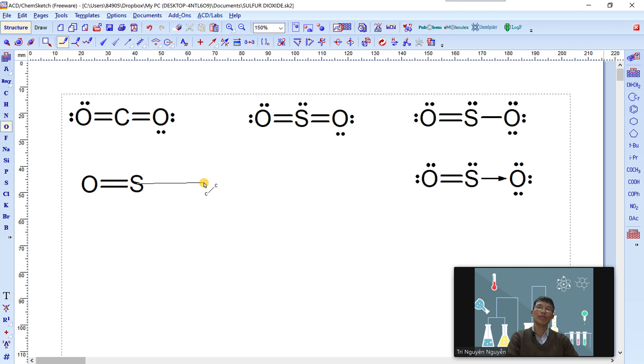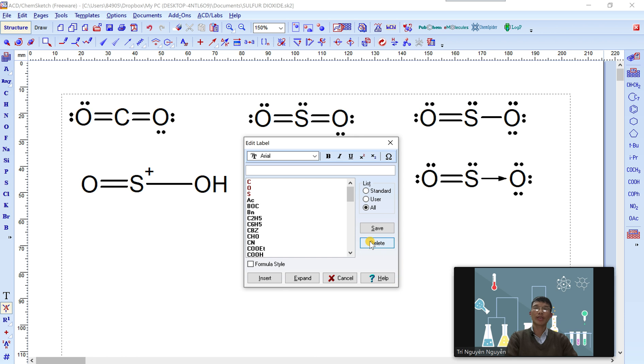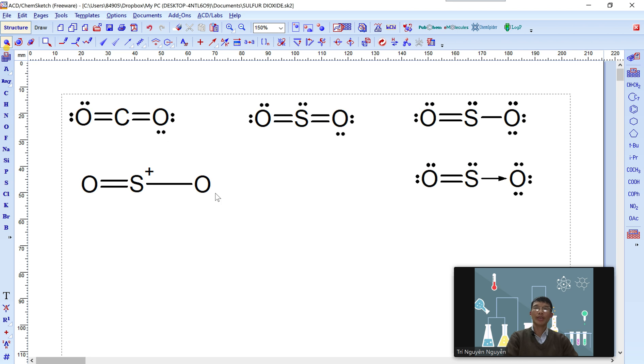Yes, we have a single bond, but this is the hydroxyl group. So next, left click on Edit Atom Label and move the mouse pointer to here. Left click, type O, insert, okay. Use the arrow on the keyboard to adjust the bond distance.